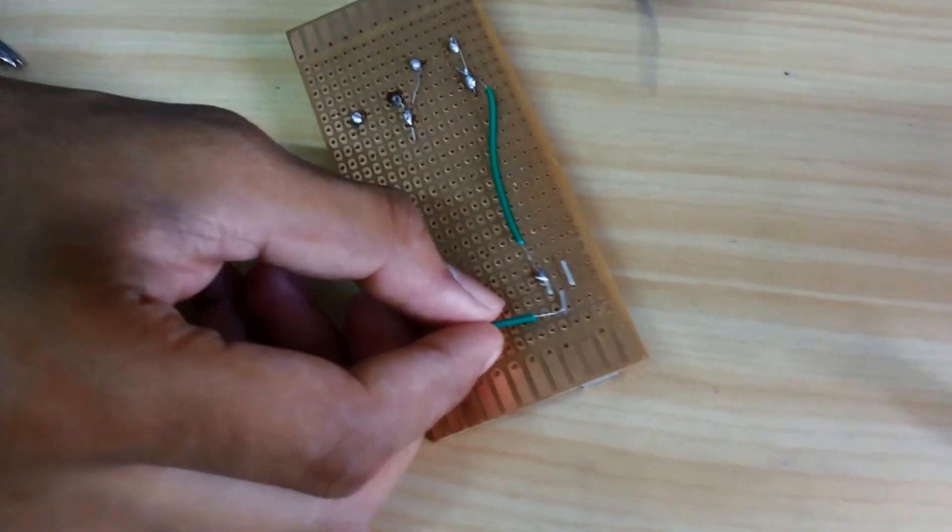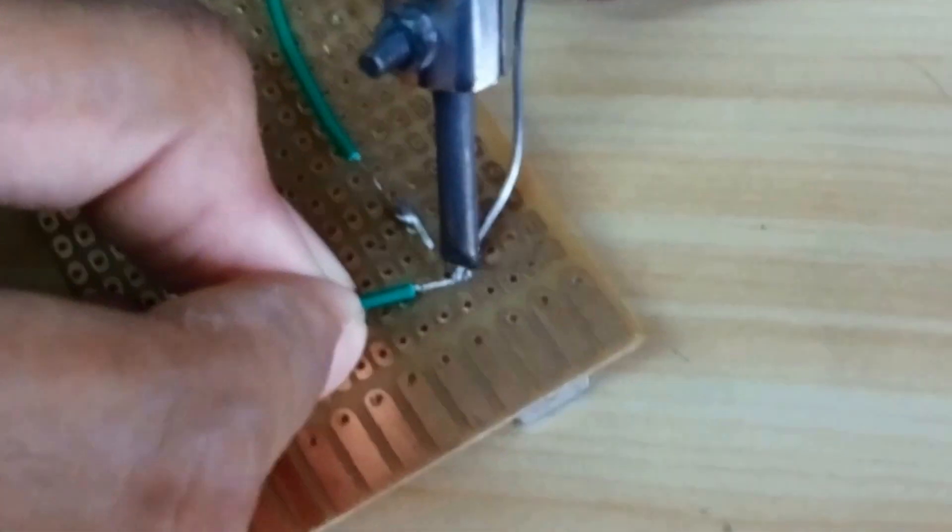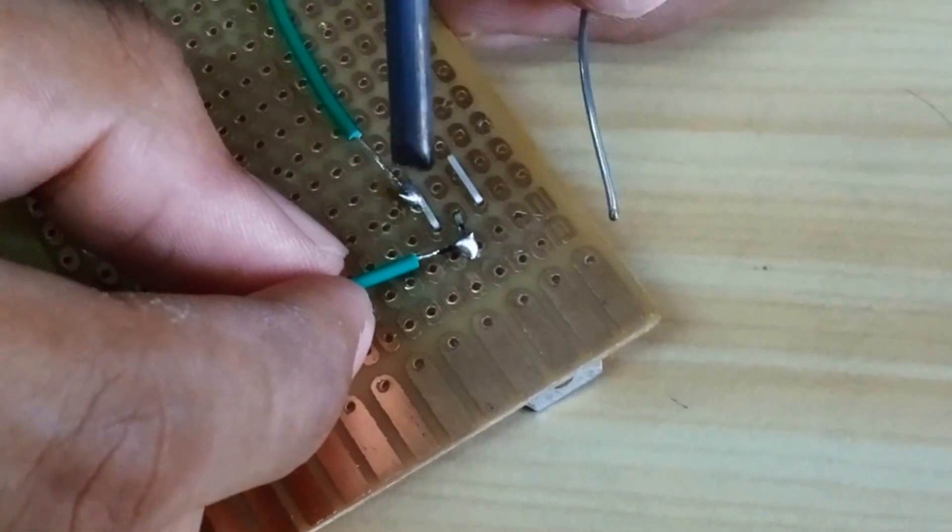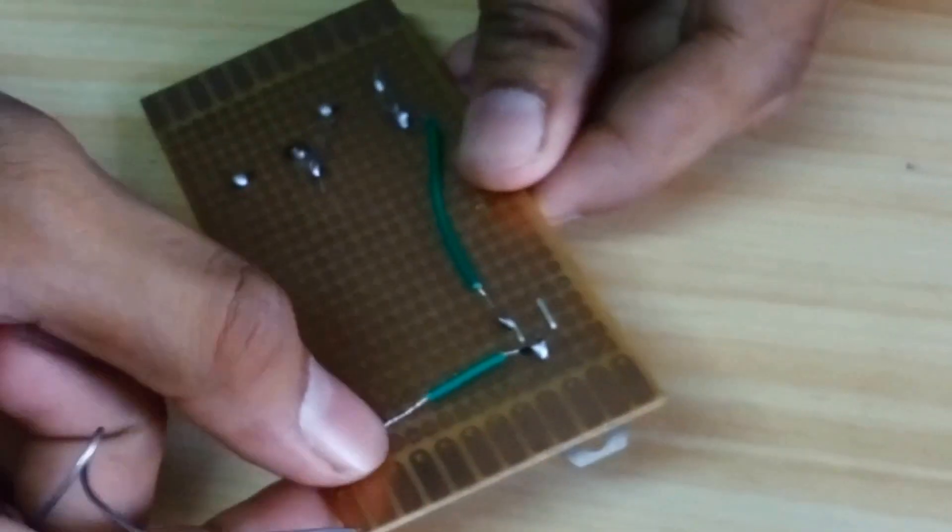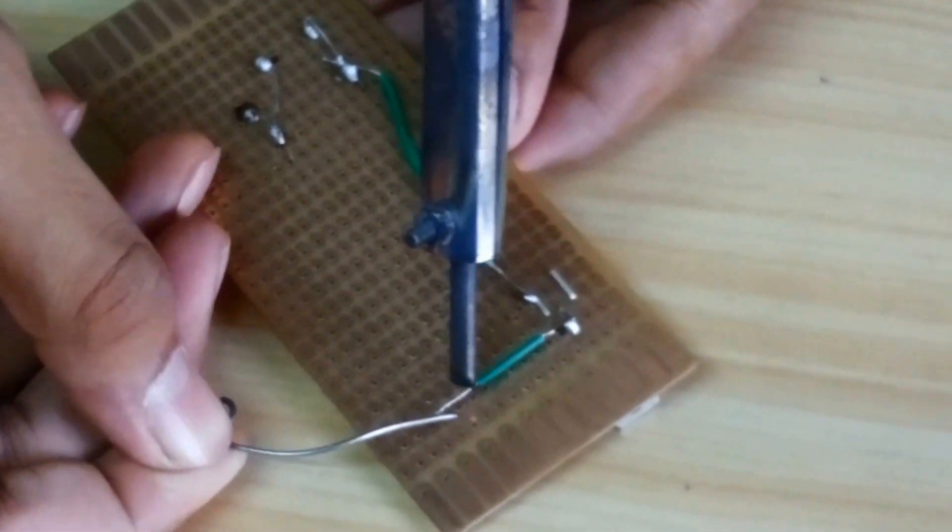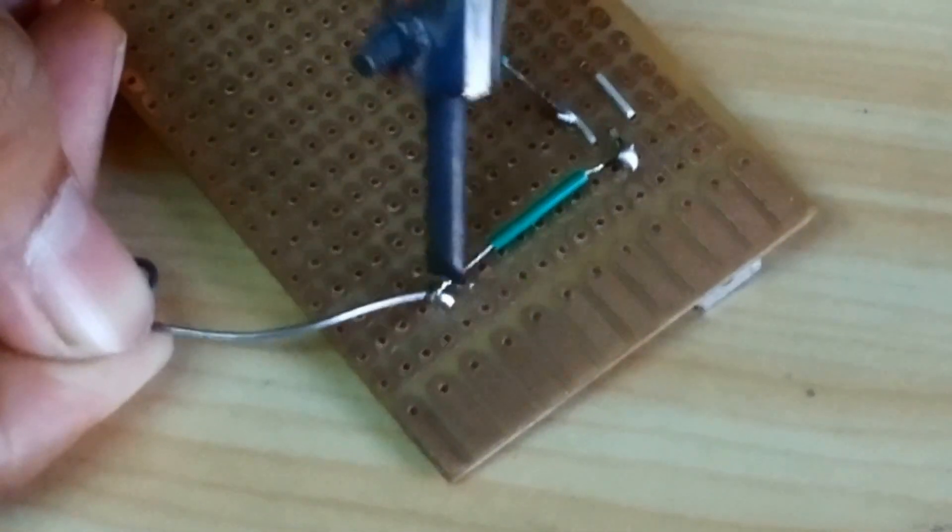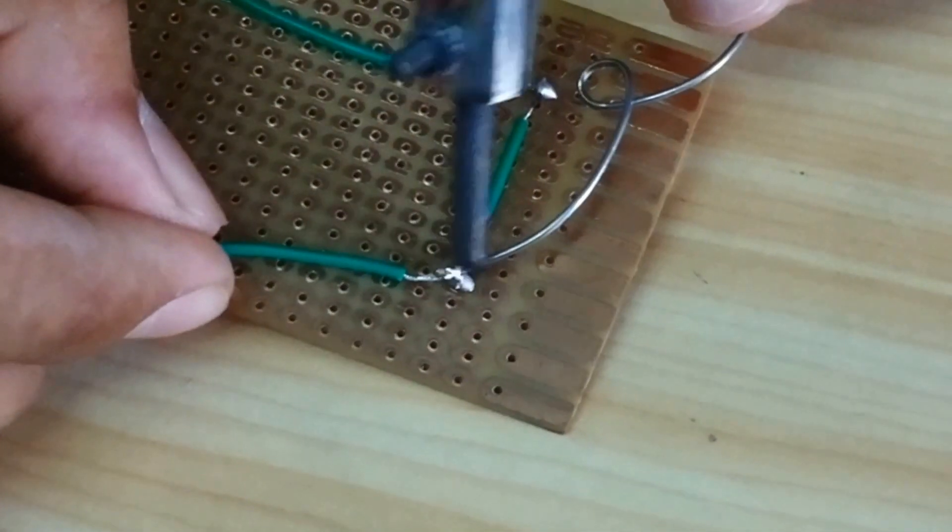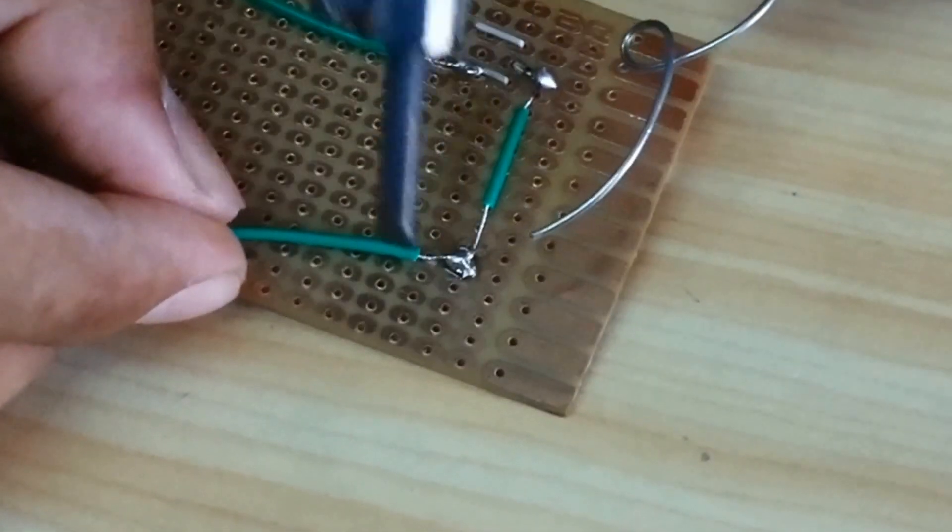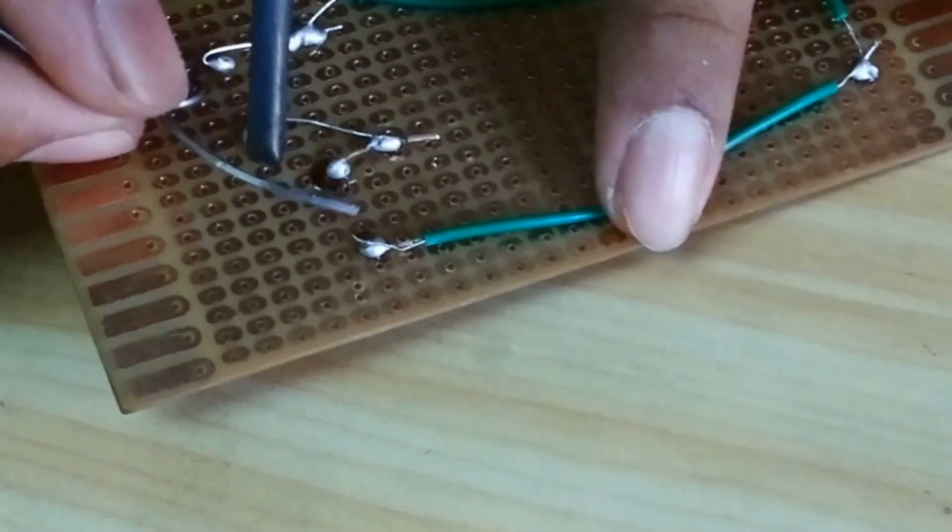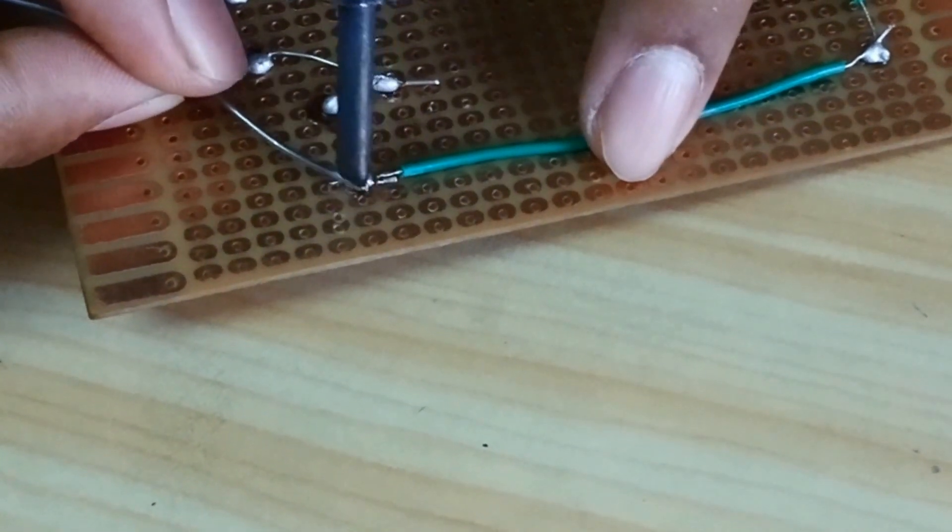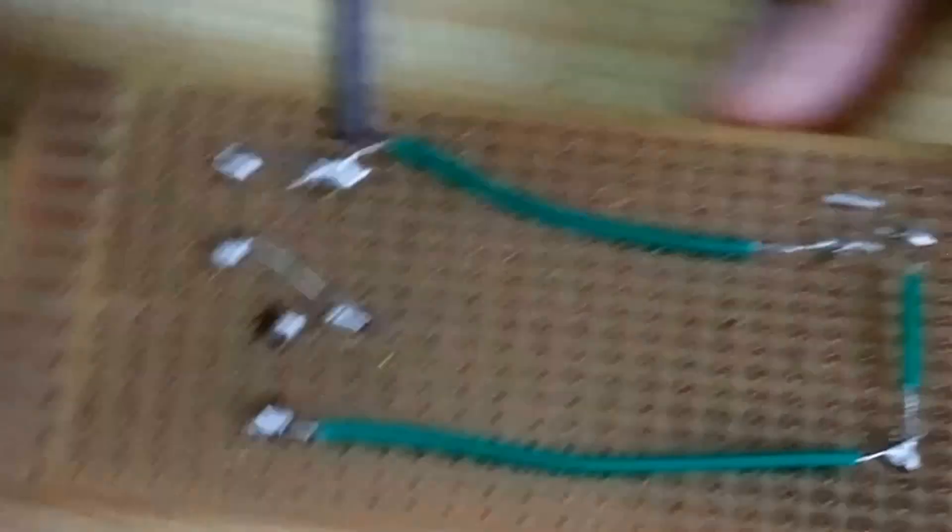This is the ground pin. What we need to do: this is the top pin and this will connect to this negative point. Now we are connecting. Now it's done.